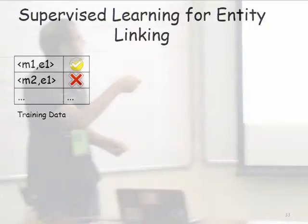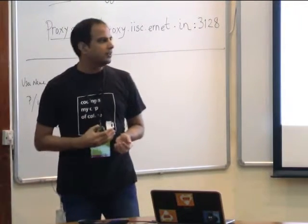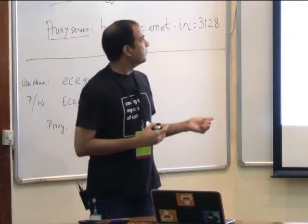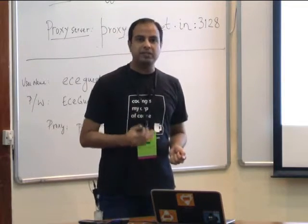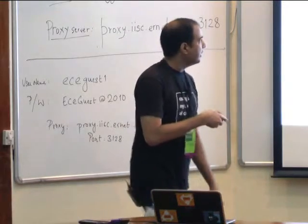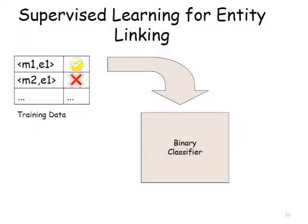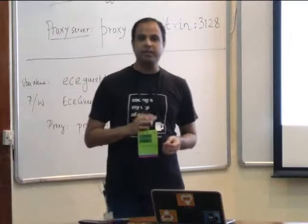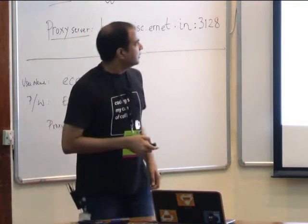You use a supervised machine learning algorithm — take the mention-entity pair and learn from the data what is a good versus bad mention-entity pair. After learning the model, apply it on test data. You essentially learn a binary classifier, and when a new mention comes in, be able to say whether a mention-entity pair is good or bad.